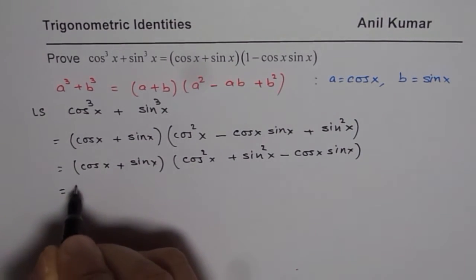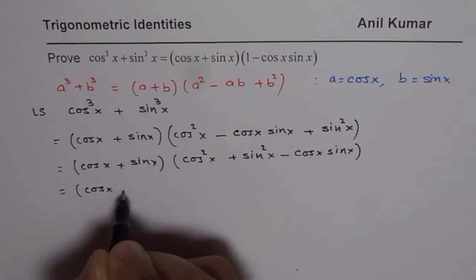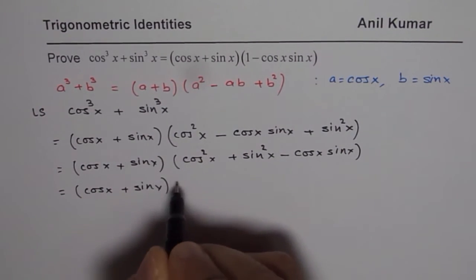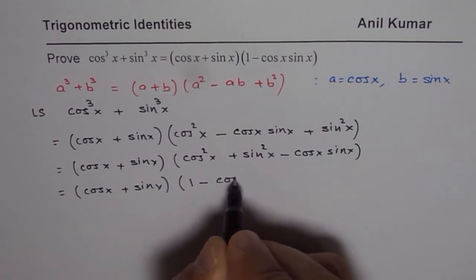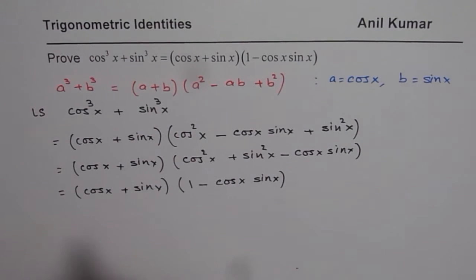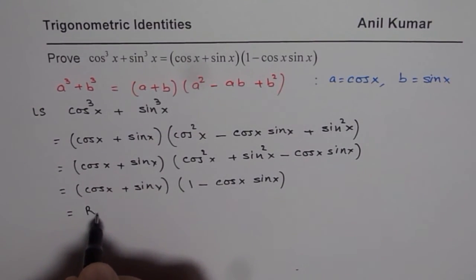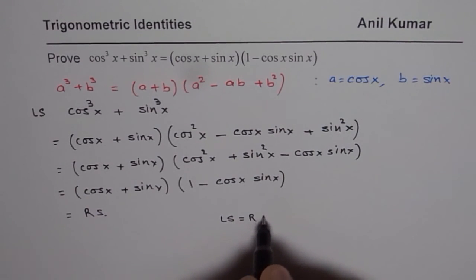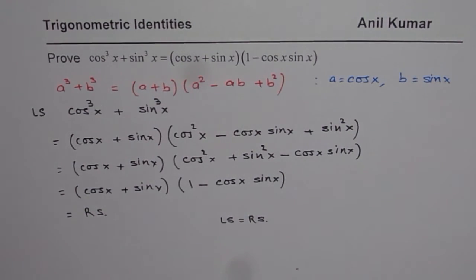So that gives us (cosx + sinx). Cos²x + sin²x is 1, so I will write 1 - cosxsinx and that is the right side. So we have shown that left side is equal to right side and that is how you can prove this identity. I hope that helps. Thank you and all the best.